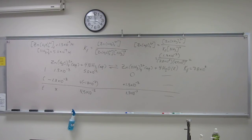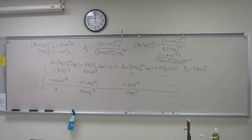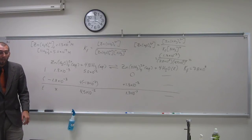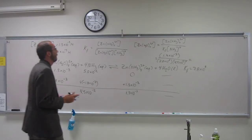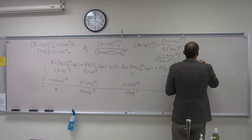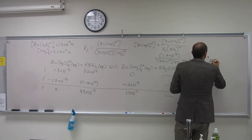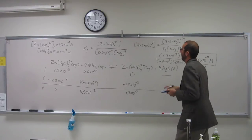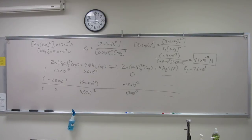When I solve that, I get a very small number — which we would have expected to be near zero, because we took nearly all of the zinc ion out. But there's still a small amount left. That small amount is 4.1 times 10 to the negative 7 molar. So that's how much of the hydrated zinc ion is still present. Are there any questions about that one?